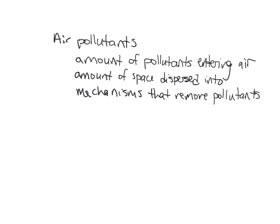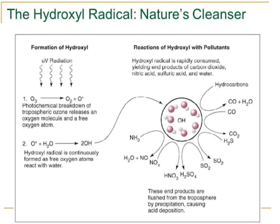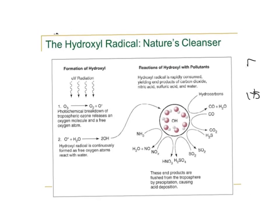The last factor determining air pollution level is mechanisms that can remove pollutants. Some things naturally in the atmosphere are capable of absorbing pollutants — these are called hydroxyl radicals. Ozone (O3) reacts with UV radiation, creating oxygen and a free oxygen atom. That free oxygen atom combines with water to form a hydroxyl radical, which can then react with pollutants like ammonia or nitrous oxides, yielding end products like carbon dioxide, nitric acid, sulfuric acid, and water.